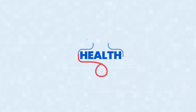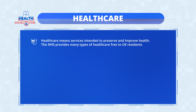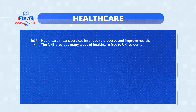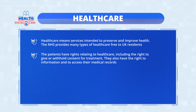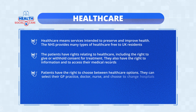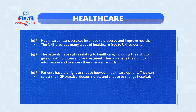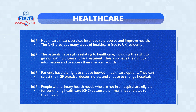Now that we've defined healthcare and social care, let's dig deeper, beginning with healthcare. Healthcare means services intended to preserve and improve health. The NHS provides many types of healthcare free to UK residents. Patients have rights relating to healthcare, including the right to give or withhold consent for treatment, the right to information and to access their medical records, and the right to choose between healthcare options — such as selecting their GP practice, doctor, nurse, and choosing to change hospitals. People with primary health needs who are not in a hospital are eligible for continuing healthcare, or CHC, because their main need relates to their health.